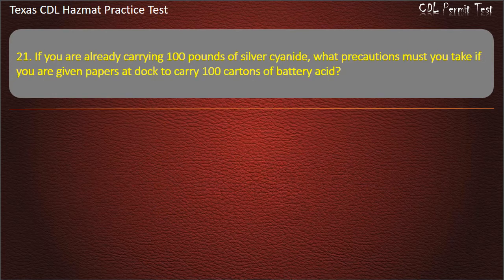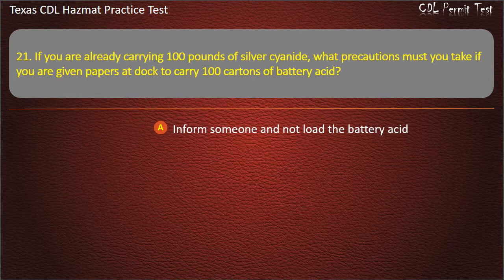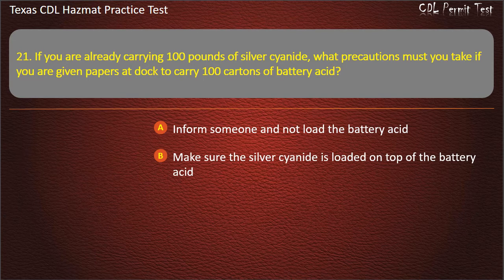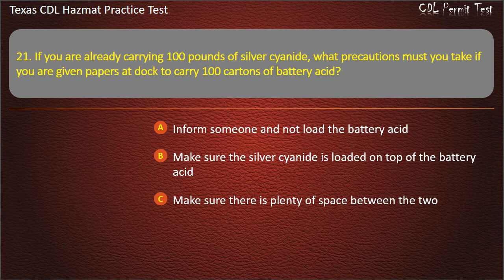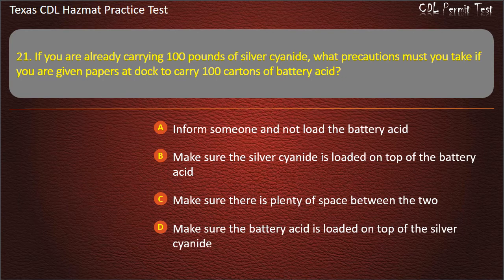Question 21: If you are already carrying 100 pounds of silver cyanide, what precautions must you take if you are given papers at the dock to carry 100 cartons of battery acid? Inform someone and not load the battery acid. Make sure the silver cyanide is loaded on top of the battery acid. Make sure there is plenty of space between the two. Make sure the battery acid is loaded on top of the silver cyanide. Answer: Inform someone and not load the battery acid.